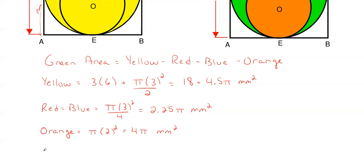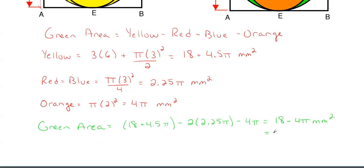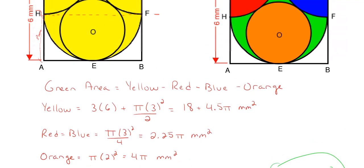Okay, so now that we have all our individual areas, we can go ahead and calculate our main that we are looking for, which is our green area, which will be equal to the yellow, which is 18 plus 4.5 pi, and then subtracting off our red and our blue, which will just be two times 2.25 pi, because 2.25 for each of those, there are two of them, so multiplying by two there. And then subtracting off our orange area, which is 4 pi. And this will give us an exact area of 18 minus 4 pi millimeters squared. Or if you wanted to round it off to an actual realistic number that people use in real life, would be 5.434 millimeters squared. And those are your answers, and that's how you would find the green area within the square shown right here.